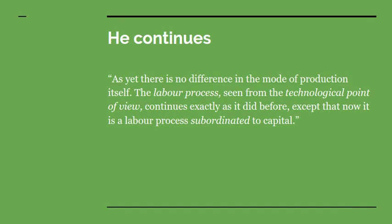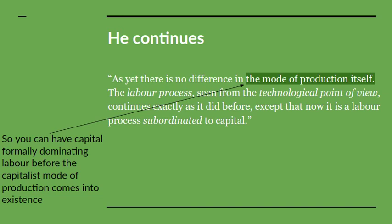For example, in the putting-out system in the weaving trade, where the yarn was put out by merchant capitalists and worked on by workers at home, who then had the merchant capitalists take the woven cloth and pay them for the labour — this is still a situation where the actual tools used are still hand-operated looms. Although these people are formally subordinated to the capitalists who control the trade, the real labour process remains the same.